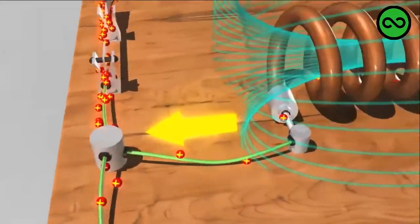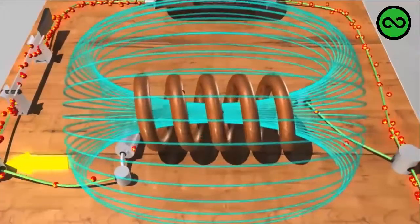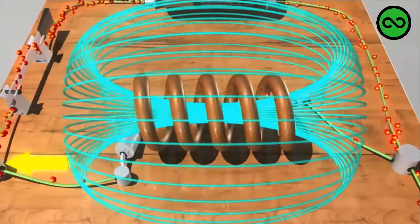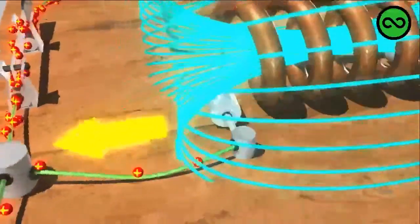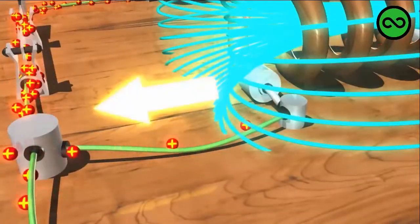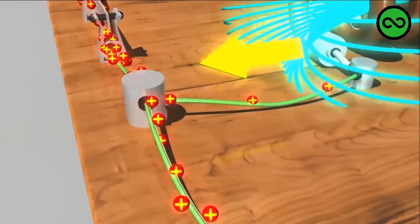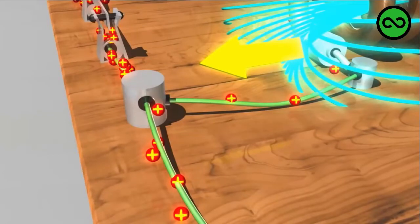So the inductor here is creating a back EMF, represented by this yellow arrow. Back EMF always opposes the change that created it. So in this instance, the back EMF is opposing the change created by turning on the circuit. It opposes the current.